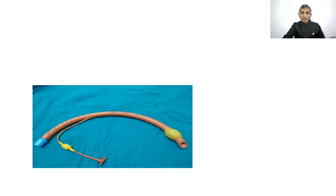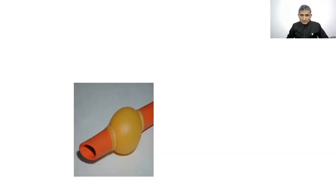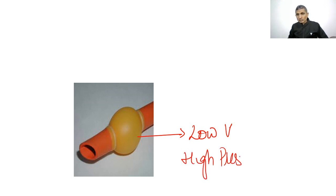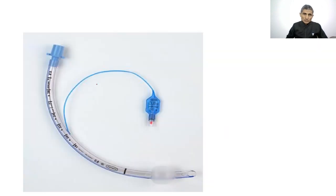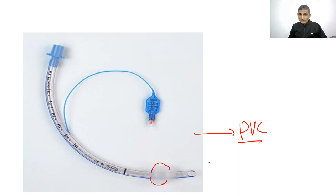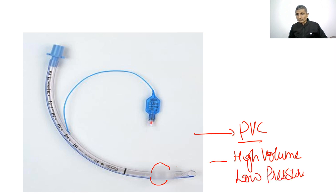The red rubber endotracheal tube is non-transparent and has a high-pressure, low-volume cuff, which can cause tracheal ischemia and cannot be used for long durations. The PVC tube is transparent and has a high-volume, low-pressure cuff — opposite to the red rubber tube. The PVC tube is also radiopaque, with a black radiopaque line inside. An HME filter (heat and moisture exchanger) attaches between the endotracheal tube and the breathing circuit.